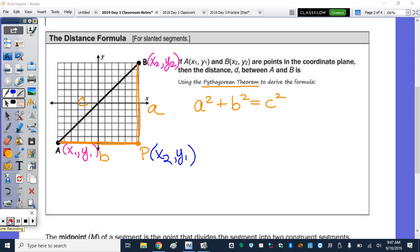So point P, algebraically, is X2, Y1. So let's take a look at what our A equals. What our B equals? Our A is this length right here. So that length, you can see they have the same X value, is going to be Y2 minus Y1. That's your rise. Think of your slope formula, rise over run. And then here, our B, because they share the same Y value, is going to be equal to X2 minus X1, or your run. So I'm going to write that over here. Our A is Y2 minus Y1, and our B is X2 minus X1.